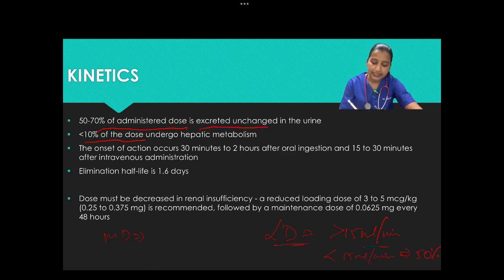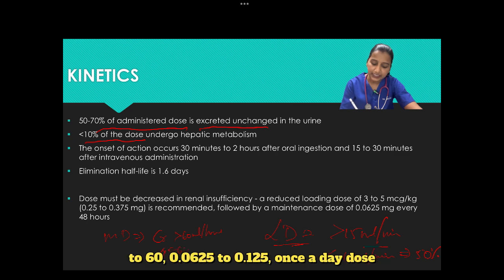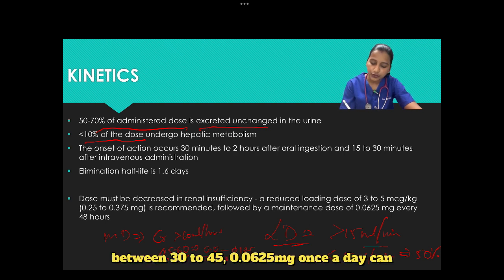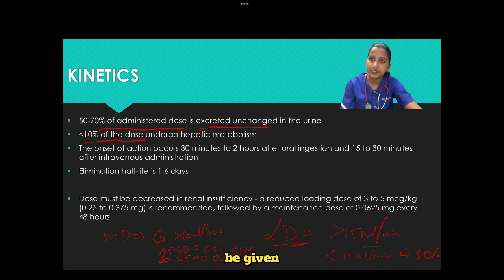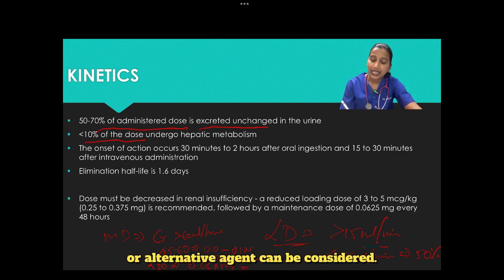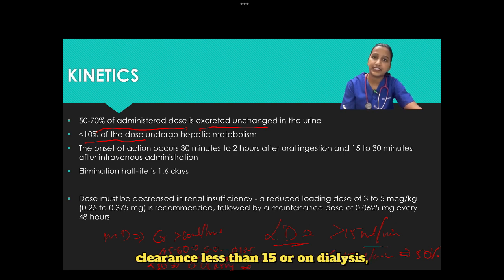For maintenance dosing: with creatinine clearance more than 60 ml per minute, no dose adjustment is required. With creatinine clearance 45 to 60, give 0.0625 to 0.125 mg once a day. With creatinine clearance 30 to 45, give 0.0625 mg once a day. With creatinine clearance less than 30, give 0.0625 mg every 48 hours, or an alternative agent can be considered. For creatinine clearance less than 15 or patients on dialysis, alternate agents should be considered.